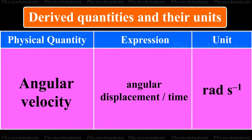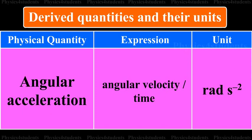Physical quantity is angular velocity. Its expression is angular displacement by time. Its unit is rad s raised to minus 1. Physical quantity is angular acceleration. Its expression is angular velocity by time. Its unit is rad s raised to minus 2.